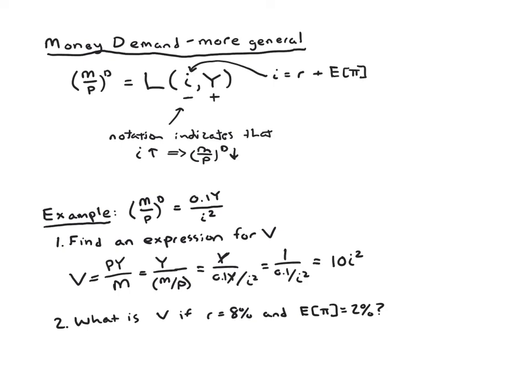So what is the velocity of money if the real interest rate is 8% and expected inflation is 2%? And you might ask, well, why are they giving us the real interest rate? We know that velocity from part one, we know that velocity depends on the nominal interest rate. But for that part, we've got to go back and remember our Fisher equation up here connects nominal and real interest. So this is kind of testing your understanding of the Fisher effect and your understanding of velocity and money demand.